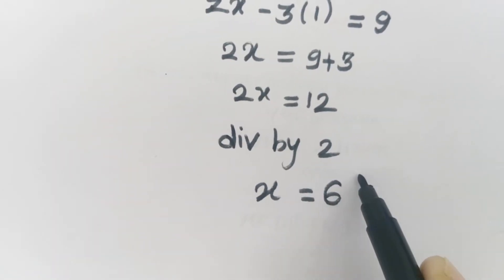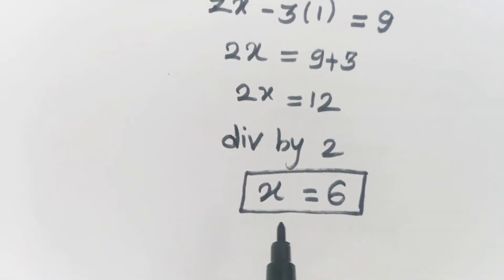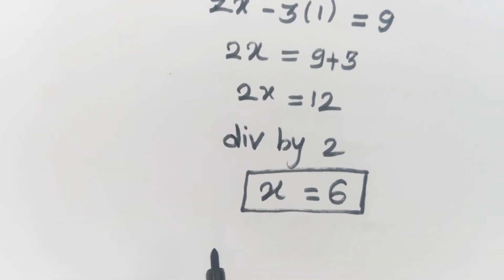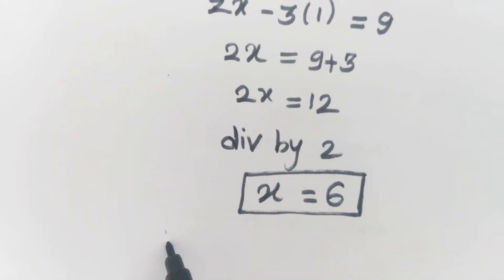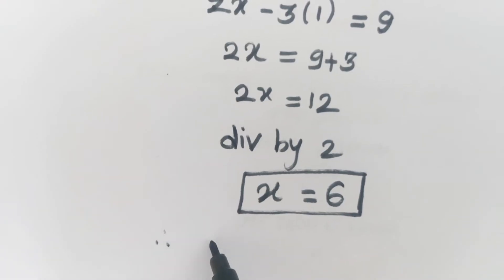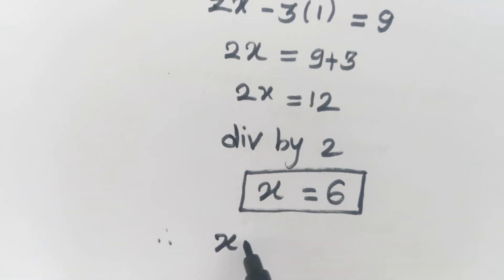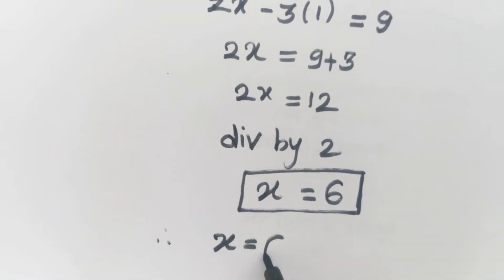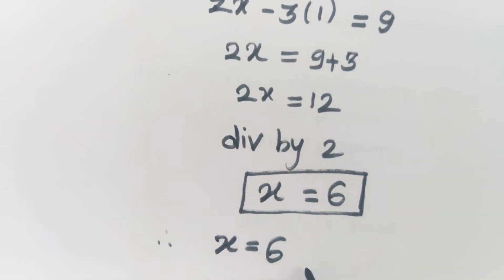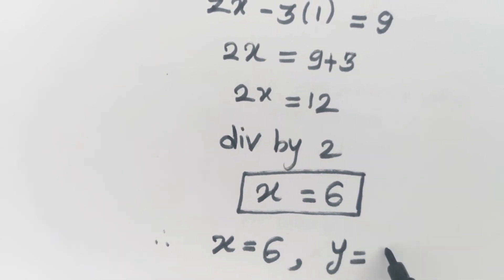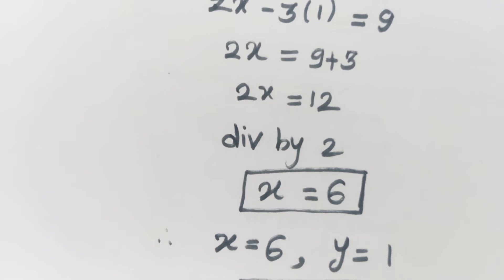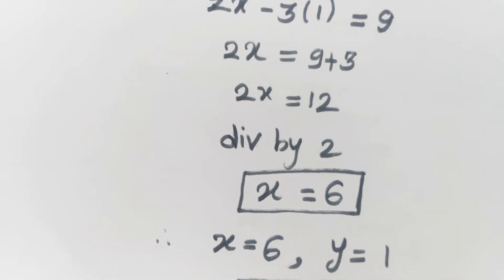Therefore, the solution of our given simultaneous equation is x equals 6 and y equals 1. This is our final solution.